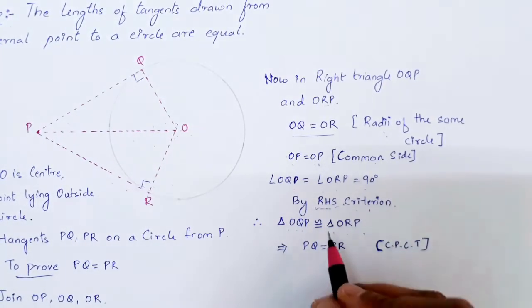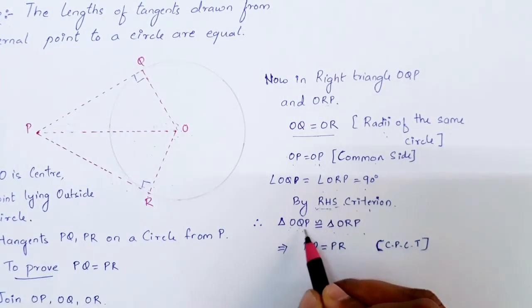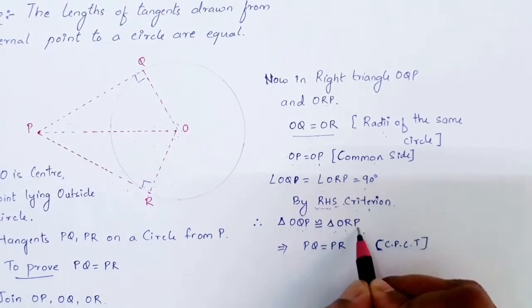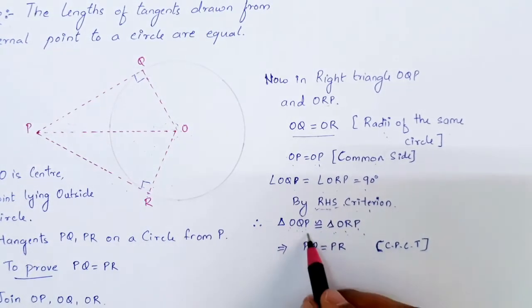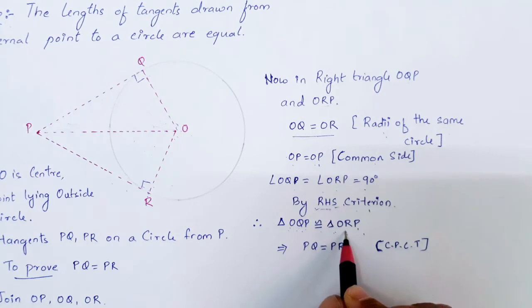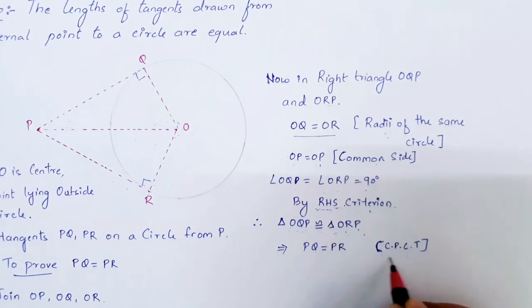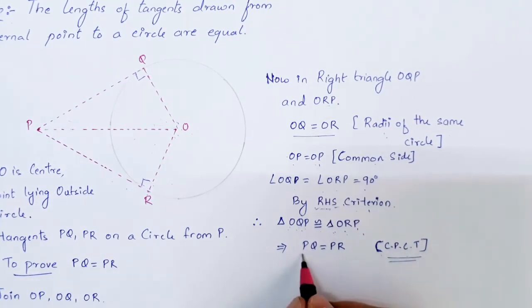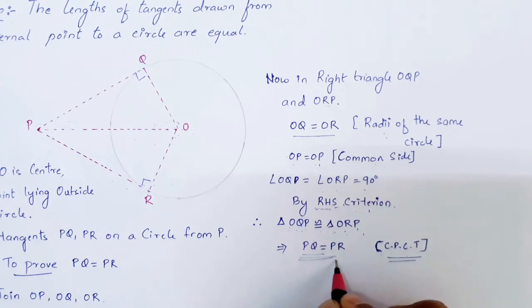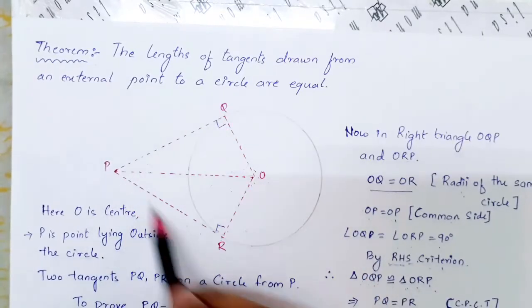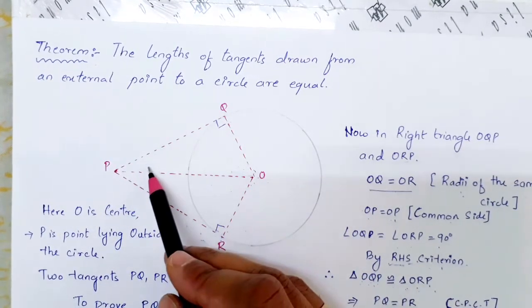By RHS criteria, we can conclude that triangle OQP is congruent to triangle ORP. So if the two triangles are congruent, then corresponding sides and angles are also the same. By CPCT, that is congruent parts of congruent triangles, we can conclude that PQ is equal to PR.